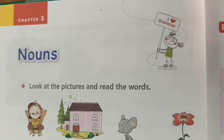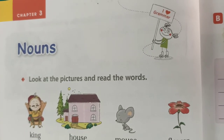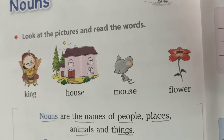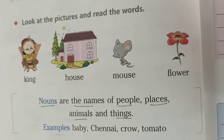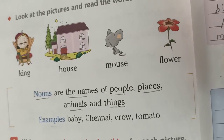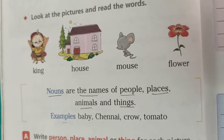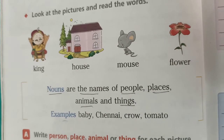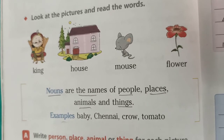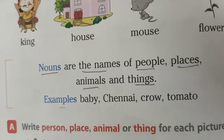Chapter 3, Nouns. What are Nouns? Nouns are the names of people, places, animals and things. Listen all of you — what are Nouns? The answer is: Nouns are the names of people, places, animals and things.